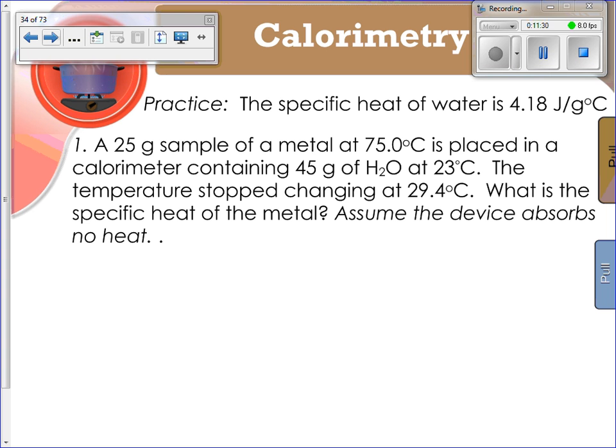When I do this problem, I know that q equals q, so I'm going to set it up where I've got mc∆T equals mc∆T. One of these has to be the water and one of these has to be the metal in my problem. I'm going to look at my metal here. My metal states that the 25 gram sample of a metal at 75 degrees Celsius is placed in the calorimeter containing 45 grams of water at 23 degrees Celsius. Those are the respective initial temperatures of my system and surroundings. The temperature stops changing at 29.4. Both are going to go to the same final temperature. What's the specific heat of the metal? Assume the device absorbs no heat.